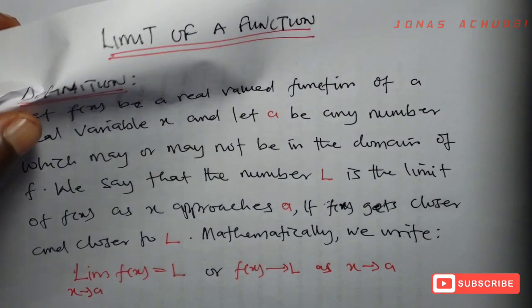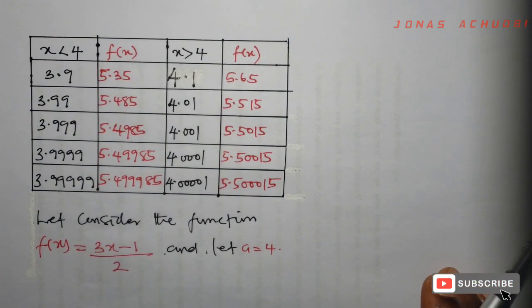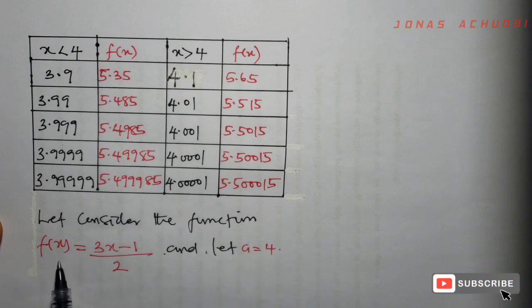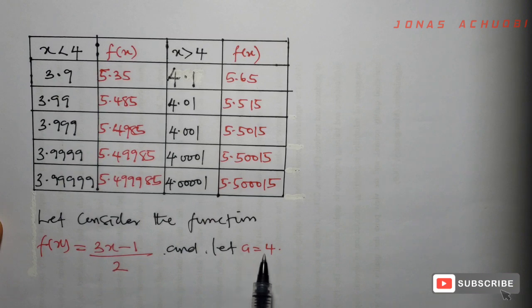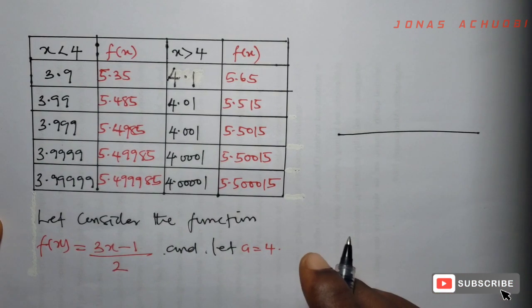Let us try to understand what this really means. To explain further what we mean by limit of a function, let us consider the function f of x equal to 3x minus 1 divided by 2, and let our point a be equal to 4. So we are looking at something like this.